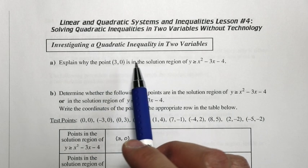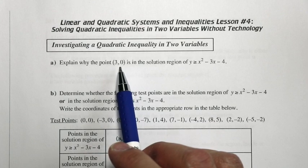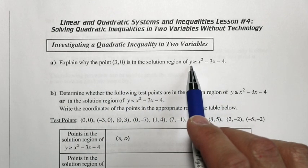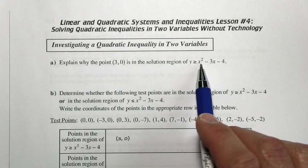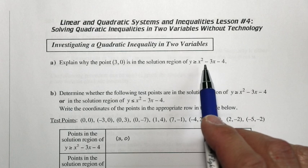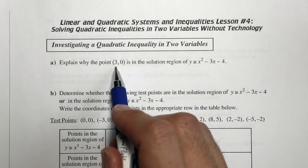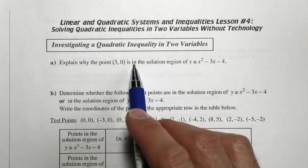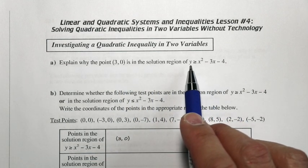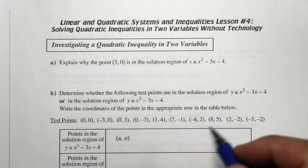We're going to take a look at this example. We have an inequality that is quadratic — it has x squared. y is greater than or equal to x squared minus 3x minus 4. We're going to look at the point (3, 0) and explain why it's in the solution region of y is greater than x squared minus 3x minus 4.